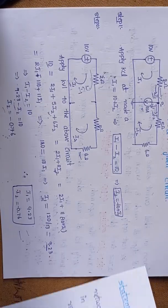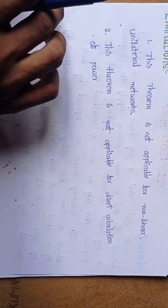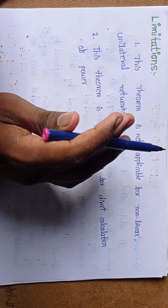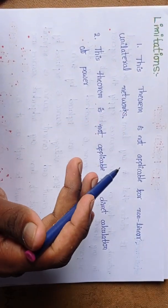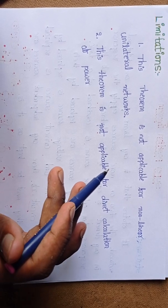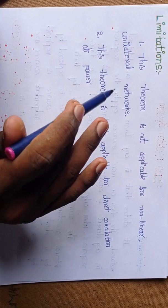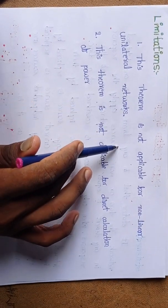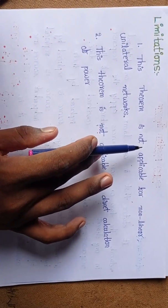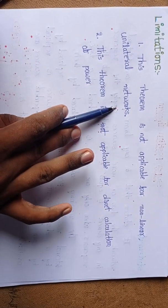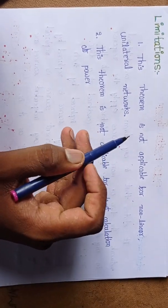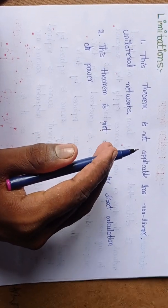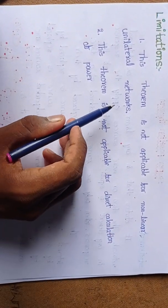Now let's look at the limitations of the superposition theorem. Limitations means the conditions required to apply superposition theorem — where it is and is not applicable. This theorem is not applicable for non-linear and unilateral networks. In other words, this theorem is only applicable for linear and bilateral networks.